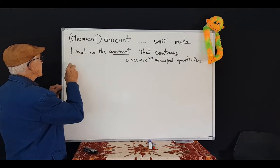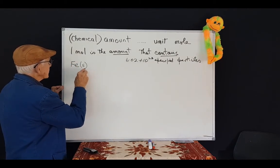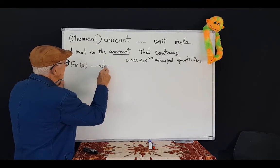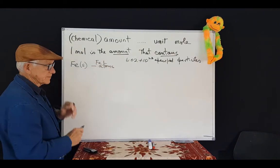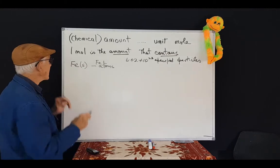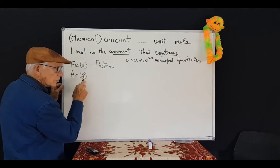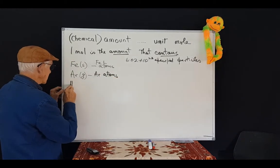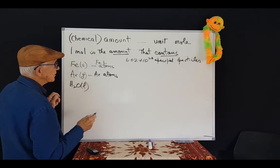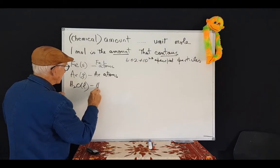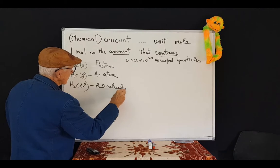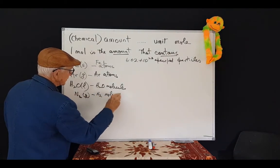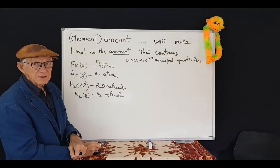For example, if we're talking about iron, solid iron, what are the particles that make up solid iron? Atoms. We're talking about iron atoms. Take another substance, like a gaseous substance, argon gas, also consists of atoms. What sorts of atoms? Argon atoms. We take a molecular substance, like water, composed of water molecules. So, we're talking about the specified particles, water molecules. Nitrogen gas, we're talking about N2 molecules, diatomic nitrogen molecules.